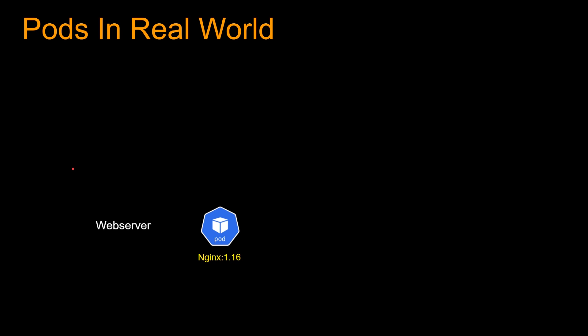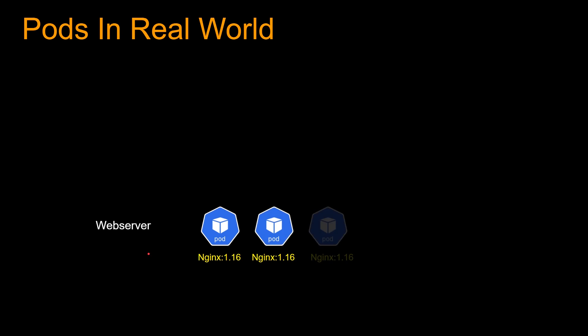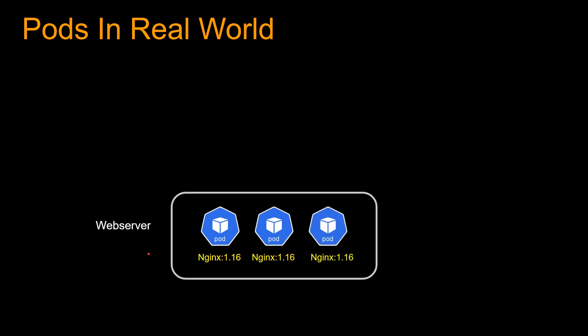Let's start from pods. You guys and girls know that a pod can run a certain container image. So let's say you want to run a web server — maybe you are running Nginx version 1.16 in a pod. And to make it highly available, you spin up more pods with Nginx 1.16 and put all these pods in a replica set, so that if one pod goes down, the replica set will restore it and the system can achieve high availability.